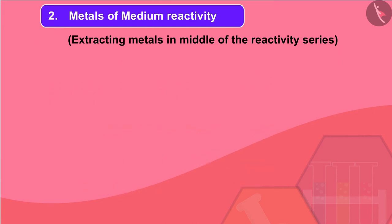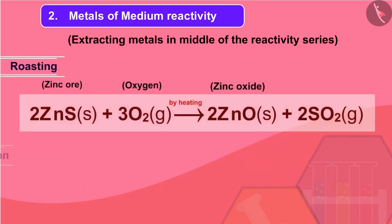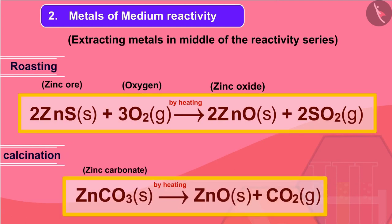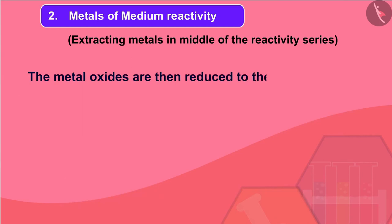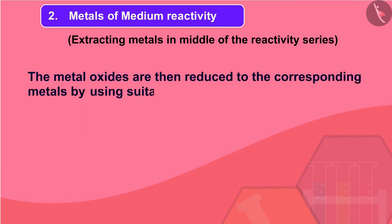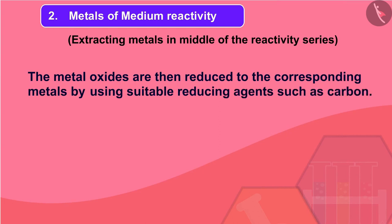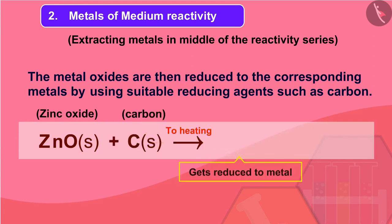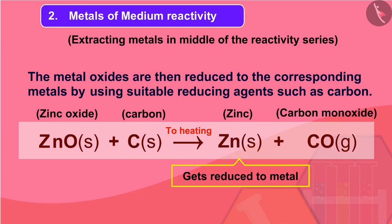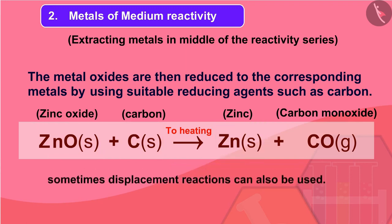The chemical reactions take place during roasting and calcination of zinc ores. The metal oxides are then reduced to the corresponding metals by using suitable reducing agents such as carbon. For example, when zinc oxide is heated with carbon, it is reduced to metallic zinc. Besides using carbon or coke to reduce metal oxides to metals, sometimes displacement reactions can also be used.